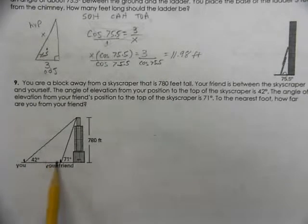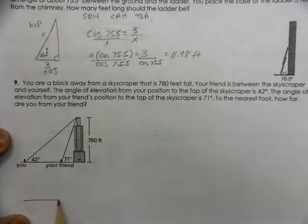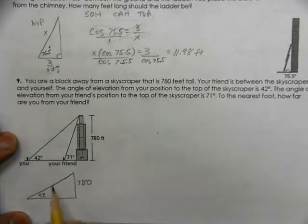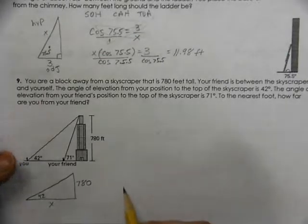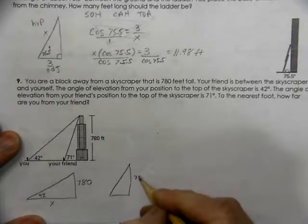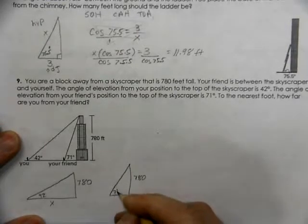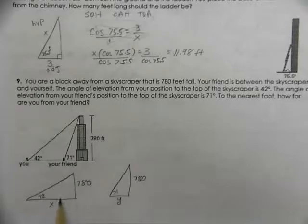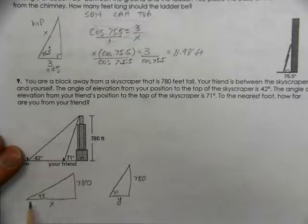So, you've got to come up with some plans. How could we possibly solve for the distance between you and your friend? Well, if we took the big triangle, 42 degrees, and we found out that total distance that it takes to get to the building, and then, still 780 feet tall building, this time we're at 71 degrees, where your friend stands. We need to figure out how close they are to the building. And once you do that, then we can subtract the two to see what would be left over.